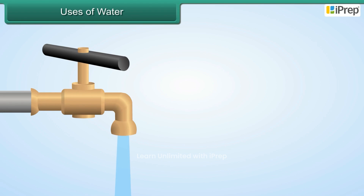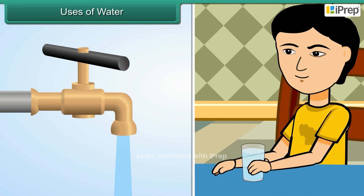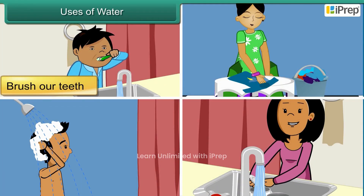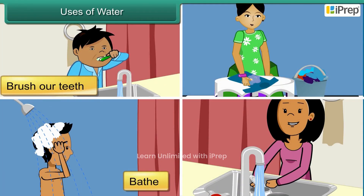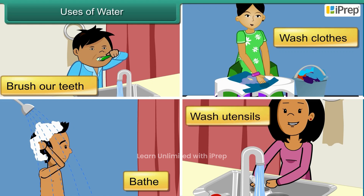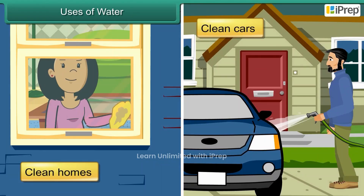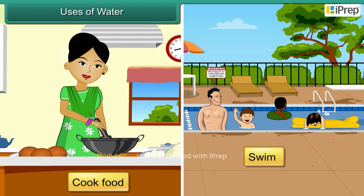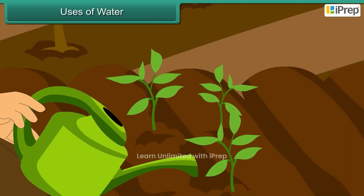Sources of water: oceans, seas, rivers, lakes, ponds, and wells are sources of water on earth. Water has many uses. Most importantly, we use it for drinking. We also use water to brush our teeth, bathe, wash our clothes and utensils, clean our homes and cars, and cook food.